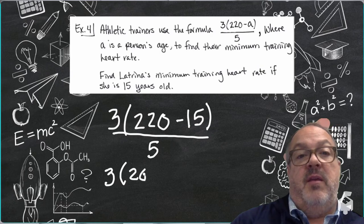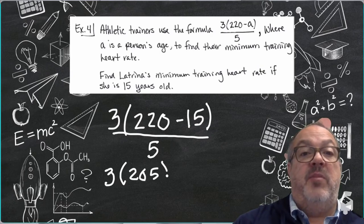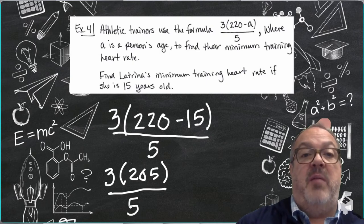So then I'm going to have 3 times 205, and then I'm going to divide that by 5.